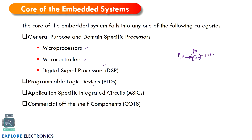We can also have a programmable logic device — a device of logic gates, using AND gates and combinations of OR gates that we can program by making connections. This is called a programmable logic device. Similarly, application-specific integrated circuits (ASICs) are fabricated to perform only certain operations — that's why they're called application-specific. Microcontrollers and microprocessors are not application-specific; they are general purpose. Commercial off-the-shelf components can also be used as a core of an embedded system.